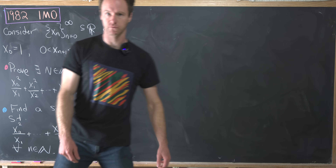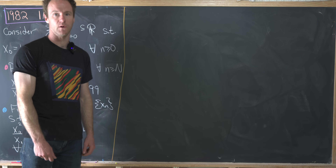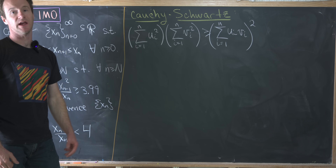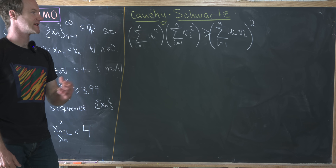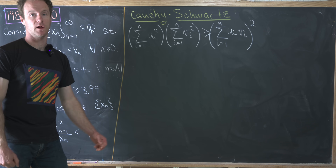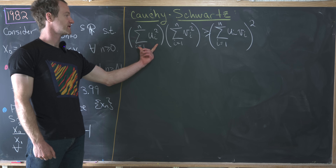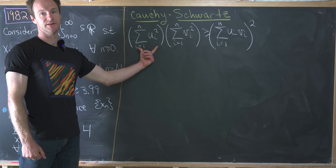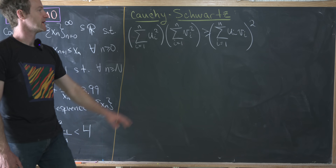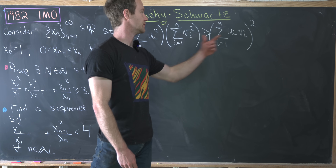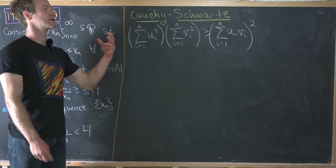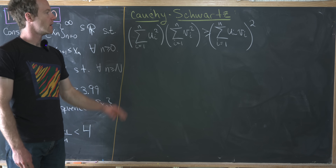Let's first recall the Cauchy-Schwarz inequality. For all real numbers uᵢ and vᵢ, the following inequality holds: the sum of the squares of the uᵢ's times the sum of the squares of the vᵢ's is bigger than or equal to the square of the sum of the products uᵢvᵢ.